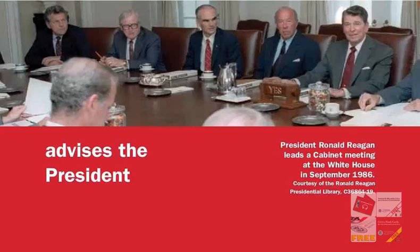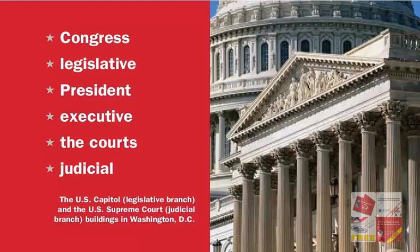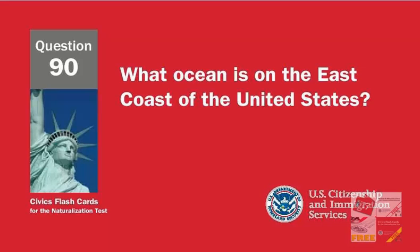What does the President's Cabinet do? Advises the President. Name one branch or part of the government. Congress. Legislative. President. Executive. The Courts. Judicial.